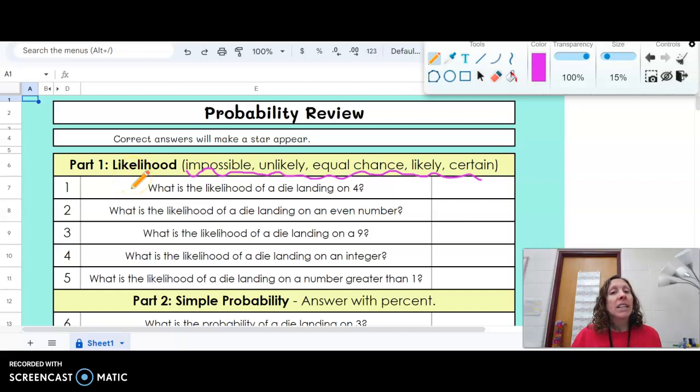Number one, what is the likelihood of a die landing on four? Dice means two or more, die is the singular version, which means you just have one number cube that you're rolling. On a die, there are six sides. Of those six sides, one of the sides has the number four.